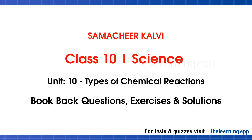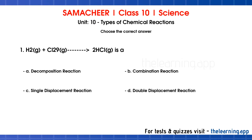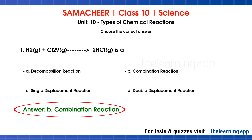Hi students! Today we will look at the book back questions and answers for the lesson 'Types of Chemical Reaction' from 10th Standard Science, Chemistry, Unit 10. Let's start with the Choose the Correct Answers section. First question: H2 plus Cl2 gives 2HCl. This is a dash. Options are A) decomposition reaction, B) combination reaction, C) single displacement reaction, D) double displacement reaction. Correct answer is option B, combination reaction.